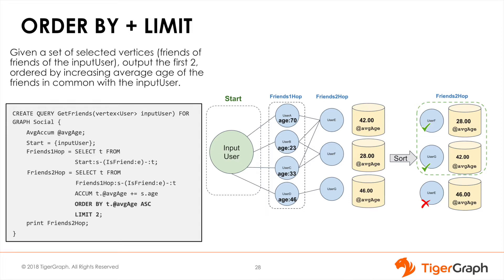Using the graph on the right, we can see that now we no longer have the HAVING clause. We take the two smallest, which are 28 and 42, and those are stored into FriendsHop.